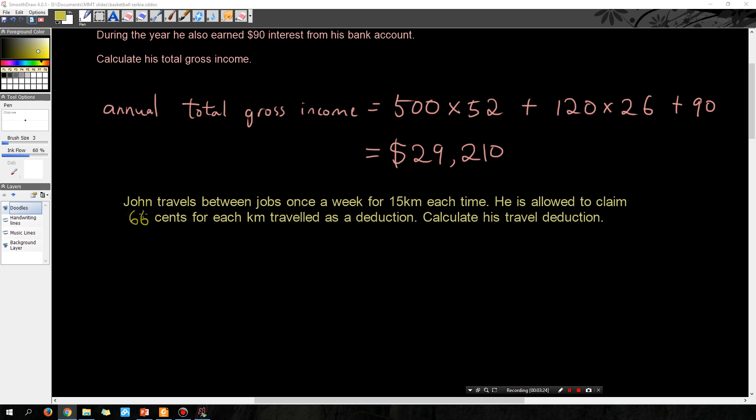He is allowed to claim 66 cents per kilometer traveled as a deduction. I believe the 66 cents is current on the Australian tax office website. Calculate his travel deduction.